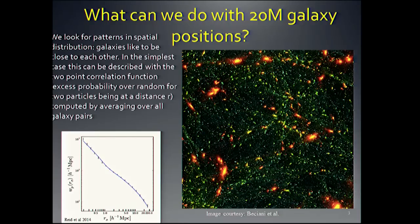The question is what do we do with it. Here's a picture from a simulation of galaxy positions. Galaxies are close to each other — they're correlated, along filaments, or clumped together into clusters. The simplest way to describe this correlation is to look at the two-point correlation function of galaxies. I'm showing an example from the current BOSS data: you count over all possible pairs of galaxies at different separations and ask what is the excess probability over random — that's the correlation function.